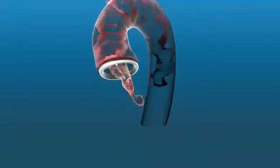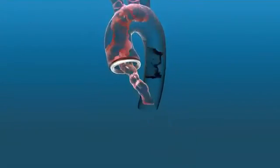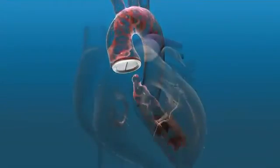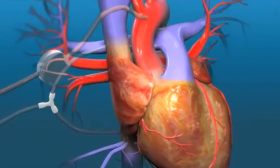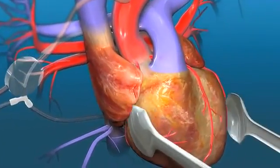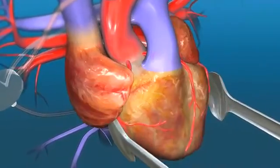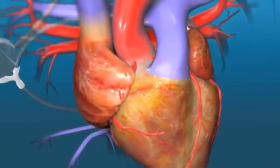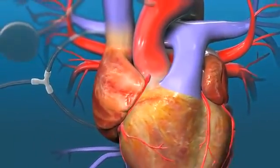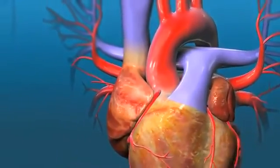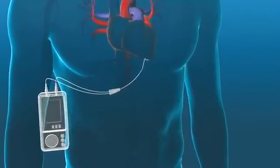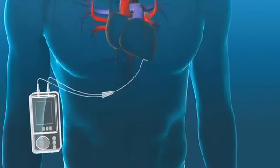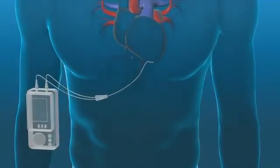At this point, blood will again be allowed to flow into your heart to check the function of the new valve. If needed, an electric shock will be given to restart the heart. Once your heart is beating on its own, it will be detached from the heart-lung machine. Generally, temporary pacemaker wires will be placed on the surface of the heart to ensure the heart maintains a normal rhythm during recovery.